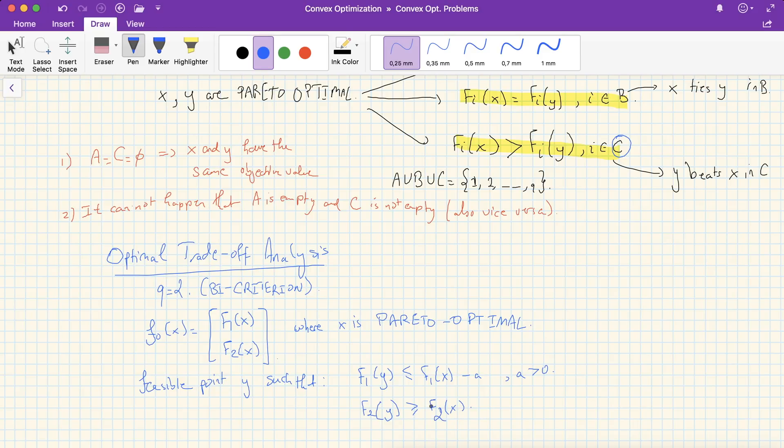and f2 of y is greater than or equal to f1 of x. That is, x beats y in objective 2, whereas y beats x in objective 1. The question here is, how much are we willing to lose in the second objective in order to achieve an improvement in the first objective?